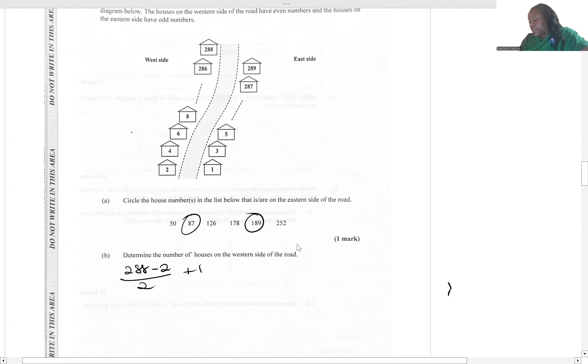So 288 minus 2, that is going to give us 286. Divide it by 2, then we add 1. 286 divided by 2 is 143 plus 1, so that's going to give us 144 houses.